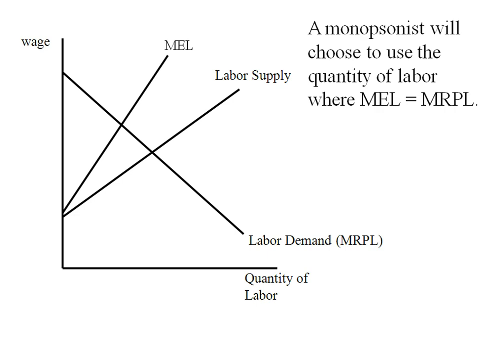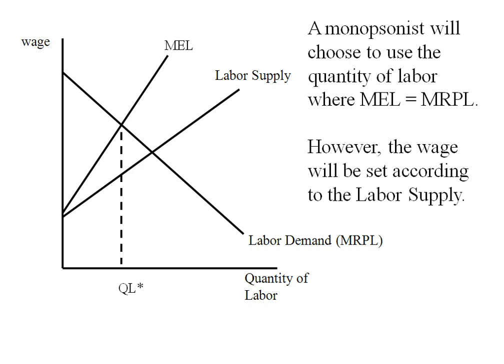A monopsonist is going to choose the quantity of labor where the marginal expenditure on labor equals the marginal revenue product of labor. We'll call that QL star. The wage is not going to be MEL — the wage is going to be set according to the labor supply. So we find where we intersect the labor supply curve, and that gives us W star.